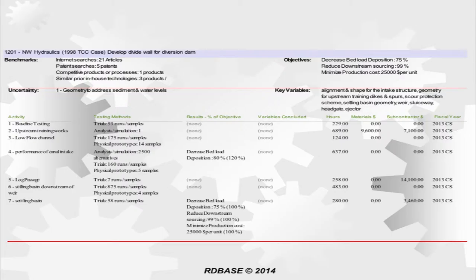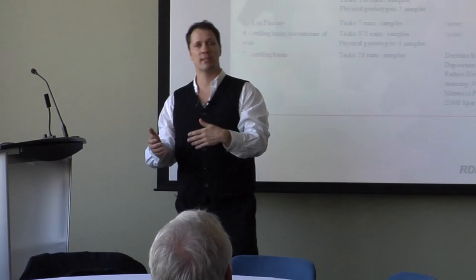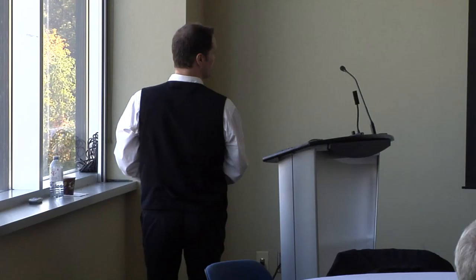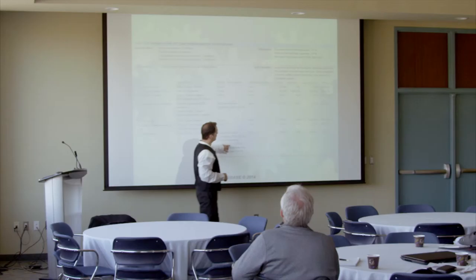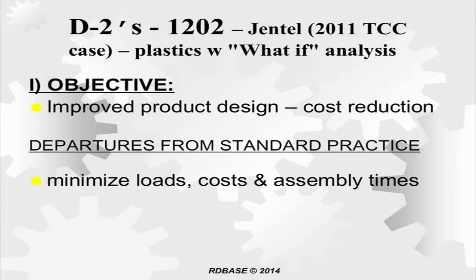To assess whether claimed costs are reasonable, for each activity we look at: did we do trials, analysis, or actual physical prototypes with materials costs? Someone skilled in the art should be able to say it looks plausible. For results, I also check which variables we concluded on. Ideally we'd want at least one conclusion — even saying a variable behaved differently than expected demonstrates technological advancement.